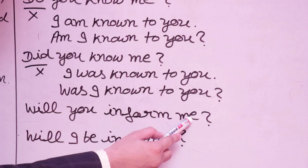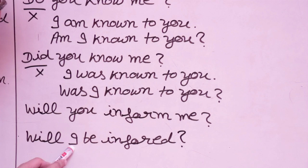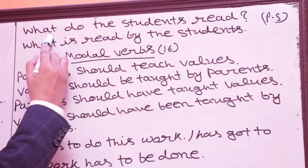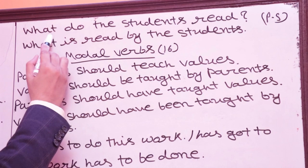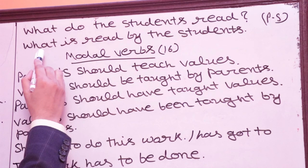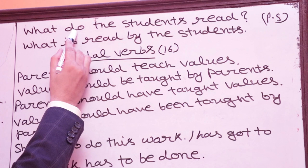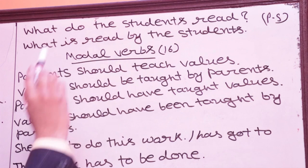Future yes/no: 'Will you inform me?' → 'Will I be informed?' For WH questions: 'What do the students read?' → 'What is read by the students?' Past WH: 'What did the students read?' → 'What was read by the students?' Continuous WH: 'What are the students reading?' → 'What is being read by the students?'